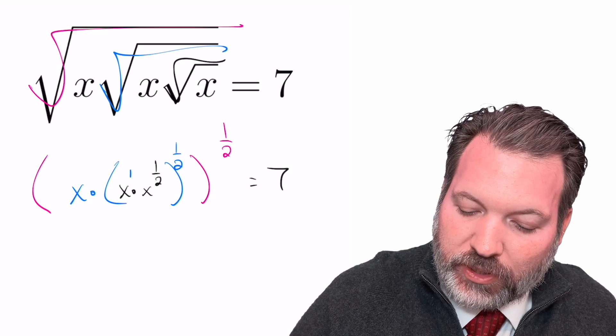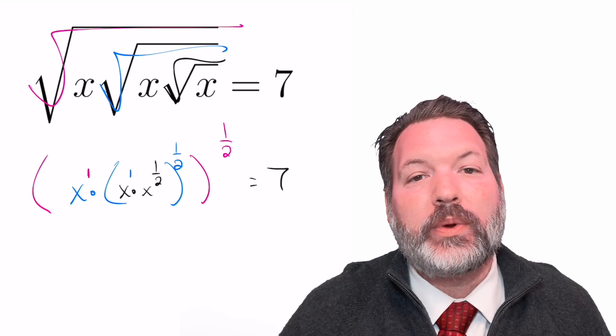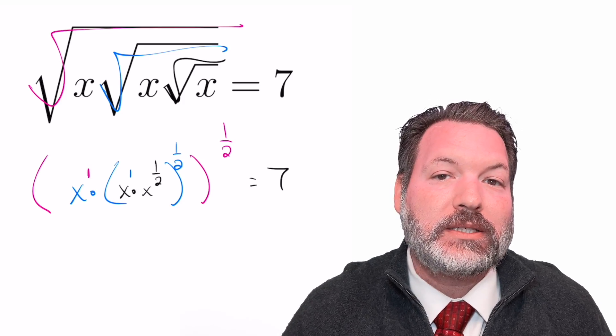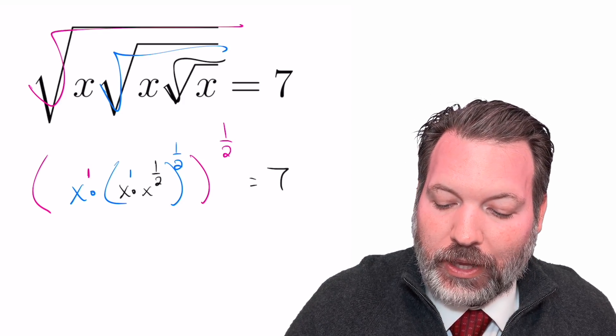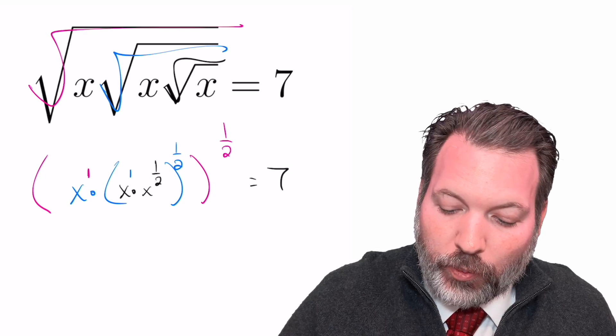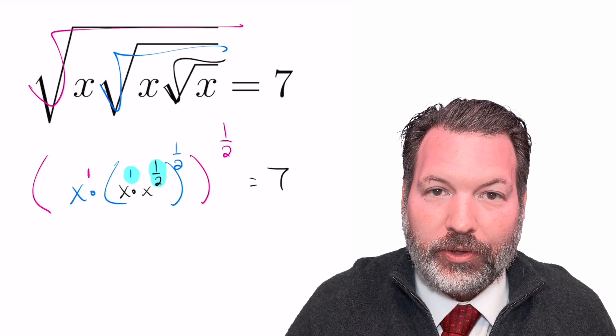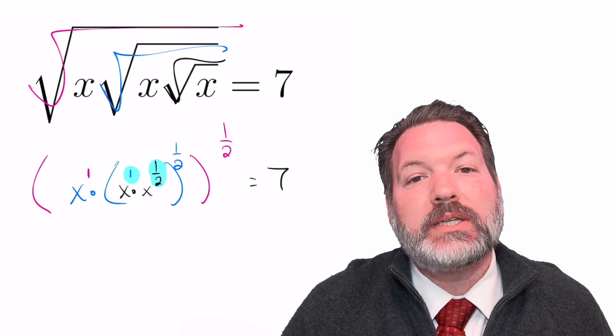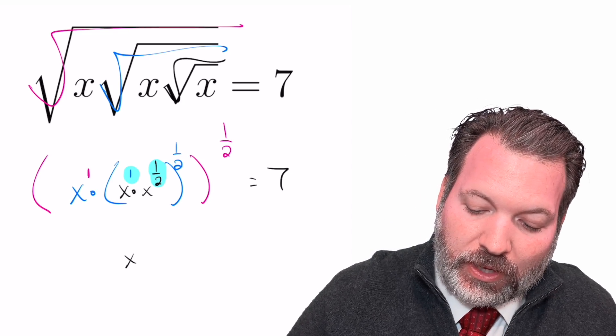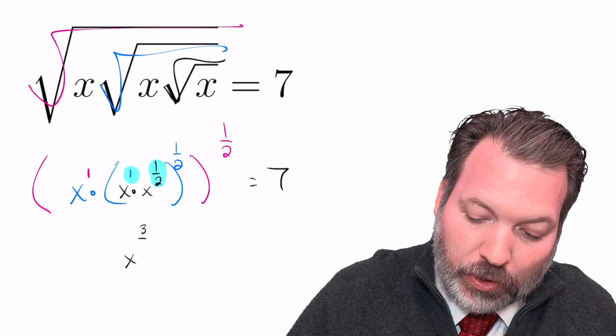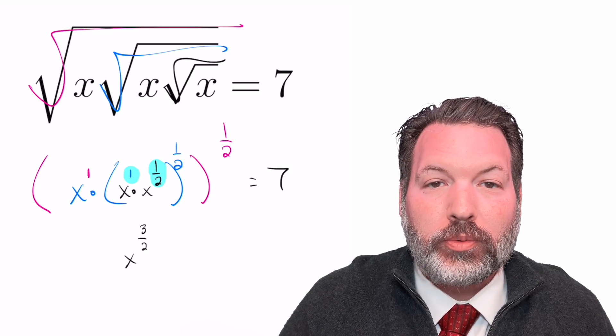From here I'm going to plug in exponents everywhere that we have an x. I'm actually going to write x to the first, and then utilize our exponent rules. When we are multiplying expressions with exponents, we can add those exponents together. So that inner x to the one times x to the one half is x to the one plus one half power, which is x to the three halves power.